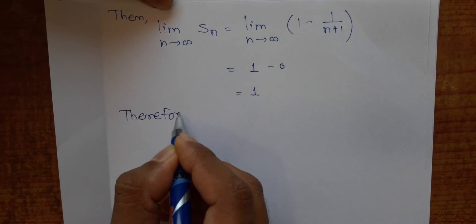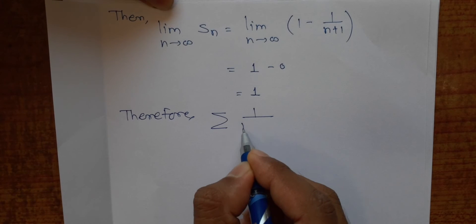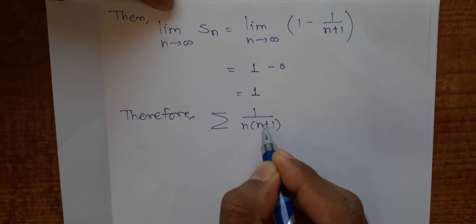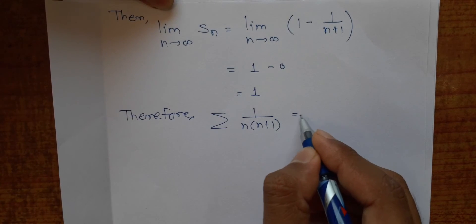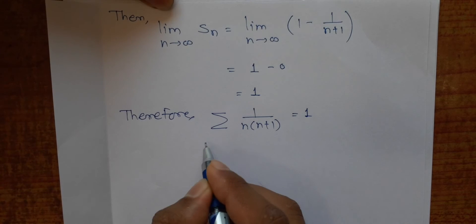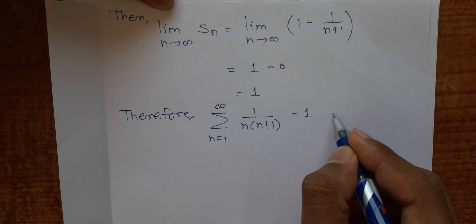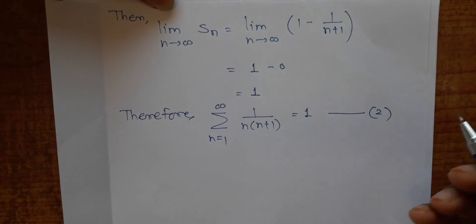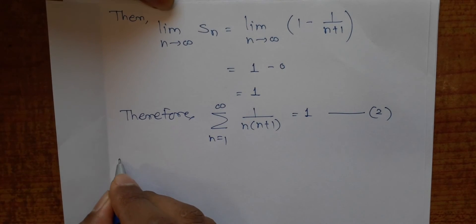Therefore, the corresponding series ∑(n=1 to ∞) 1/(n(n+1)) also converges and its value is 1. I will call this equation number 2. Now let us come back to the given question.